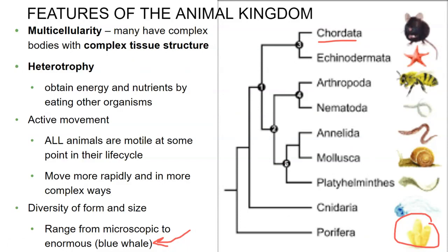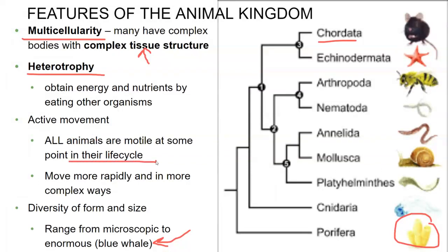So, let's talk about why the sea sponge is an animal. To be an animal, you have to be multicellular, and sea sponges are multicellular. Sometimes they're considered colonial, but they do have specific cells which do specific jobs. While they don't have a particularly complex tissue structure, they do have those dedicated cells which act as tissues. Sea sponges are filter feeders, which means they are heterotrophic — heterotrophy means that they have to consume organic material in order to get energy or nutrients. They do not actively move as adults, but in their life cycle, the larvae are free swimming — the larvae are motile.